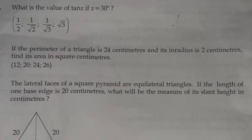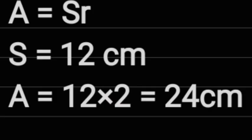Question 8: If the perimeter of a triangle is 24 cm and its inradius is 2 cm, find its area in square cm. Options: 12, 20, 24, 26. Answer: A equals SR, S equal to 12 cm, A equal to 12 times 2 equal to 24 square cm.